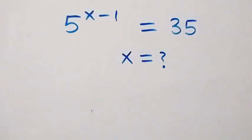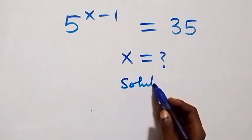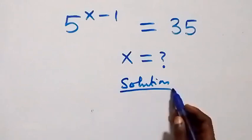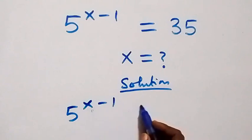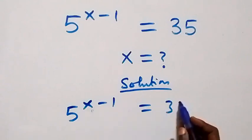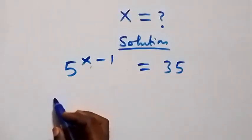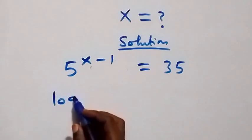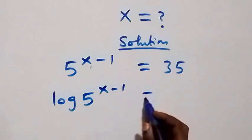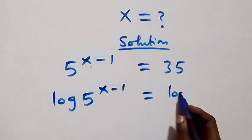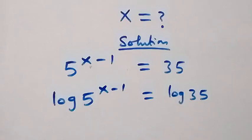Hello, you are welcome. Here is a nice exponential problem to solve. We are given 5 raised to the power x minus 1 equals 35. Let's take the log on both sides: log of 5 raised to power x minus 1 equals log 35.